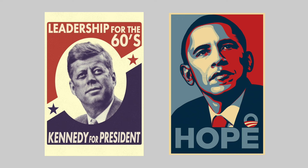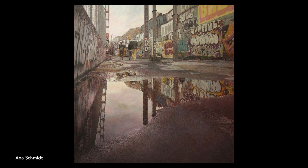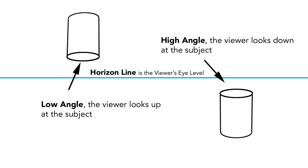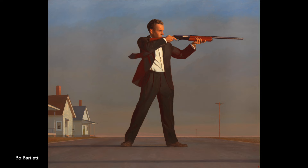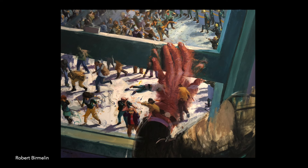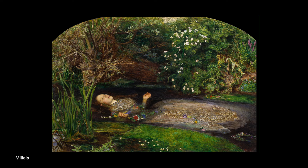Have you ever wondered why political posters so often depict the candidate from below? Just as our viewing distance from a person has psychological effects, so does our viewing angle. Low angles make the person seem powerful and heroic. High angles can suggest the opposite: helplessness, weakness, that the character is a victim of fate.